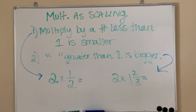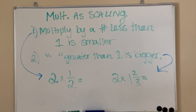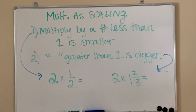Look at the board in my example. At the bottom I have two equations: two times one half, and two times one and two thirds. In the first equation, I am multiplying two by a number less than one, and the result will always be that my answer is smaller than two. Let me go over that just one more time because this does get a little tricky.